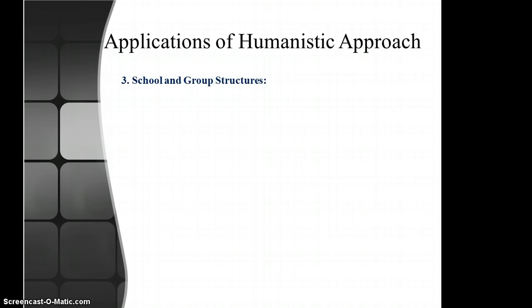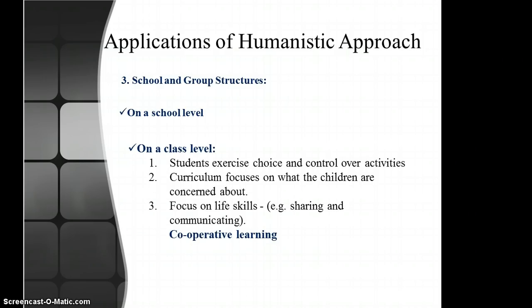Regarding school and group structure: on the school level, classes should be open, meetings could be held outside, and alternative ways of assessment should be found. On the class level, students exercise choice and control over activities, monitor their own progress, and engage in self-evaluation. The curriculum focuses on what children are concerned about, with emphasis on life skills, thinking skills, and social skills.